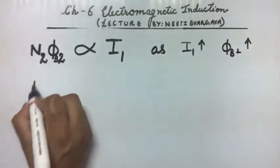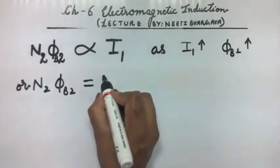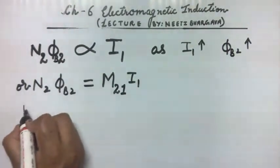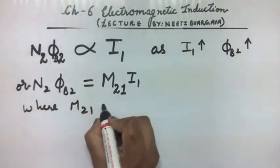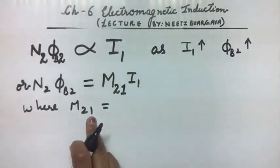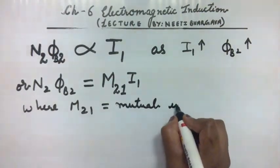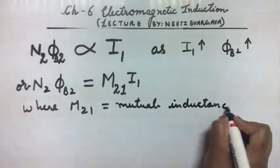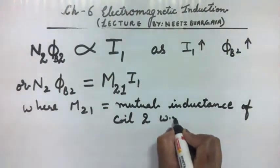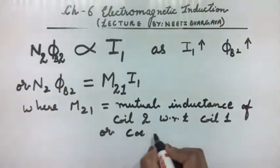We can write that N·phi₂ is equal to a proportionality constant M₂₁ multiplied by I₁, where M₂₁ is the mutual inductance of coil 2 with respect to coil 1. It is also known as the coefficient of mutual induction.